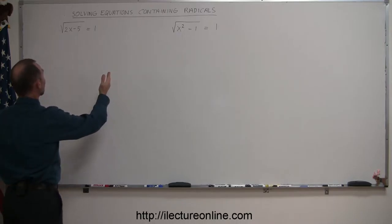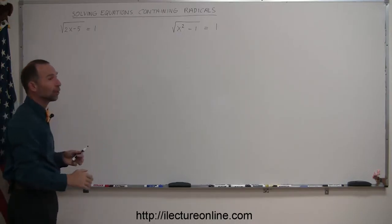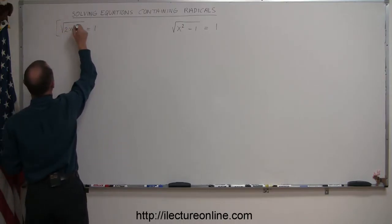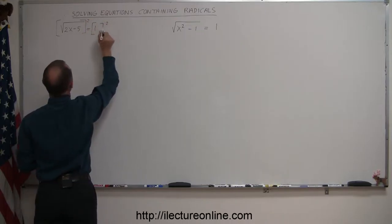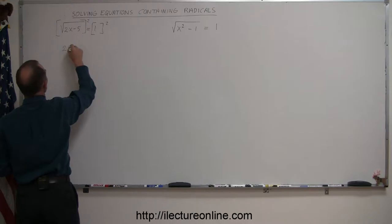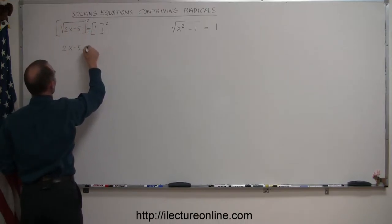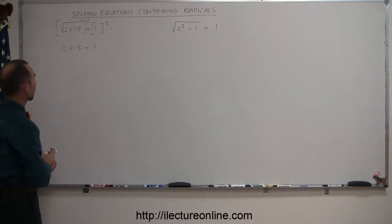If we can separate the radicals on one side from things that are not radicals on the other side, then all you have to do is simply square both sides to get rid of the radicals. In this case, we're going to square the left side and the right side. If we square the left side, we end up with 2x minus 5, because the square cancels out the radical. On the right side, 1 squared is simply 1, and then this becomes a linear equation, which is very easily solved.